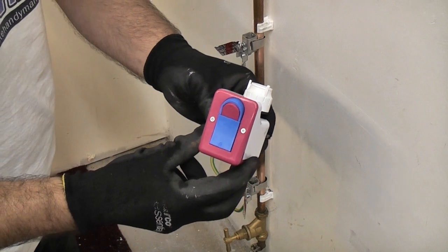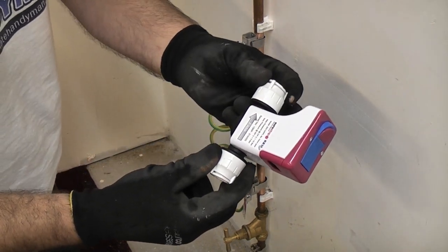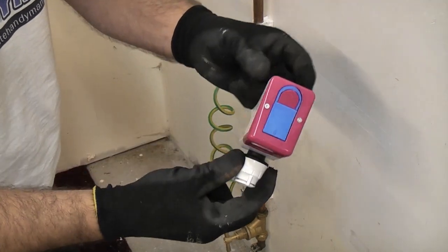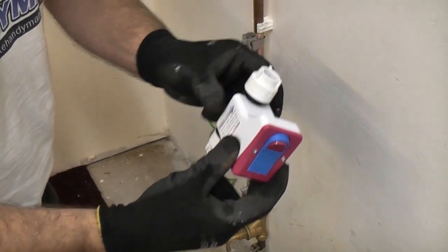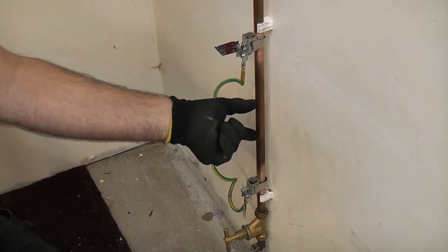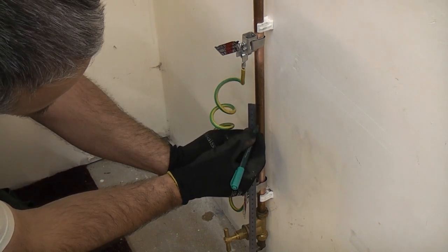This particular one is the 15mm push fit. You can also get 22mm and you can also get these with compression fittings instead of push fit. With this particular model we actually need to remove 34 millimeters of the pipe. So we're just going to mark 34mm on there.